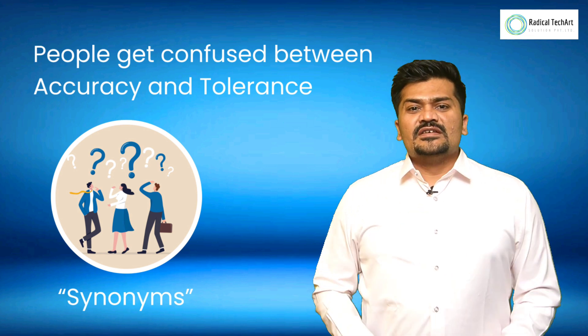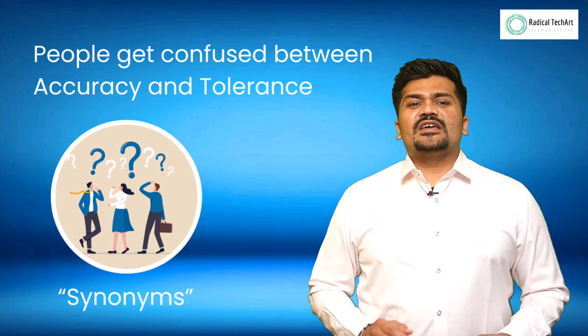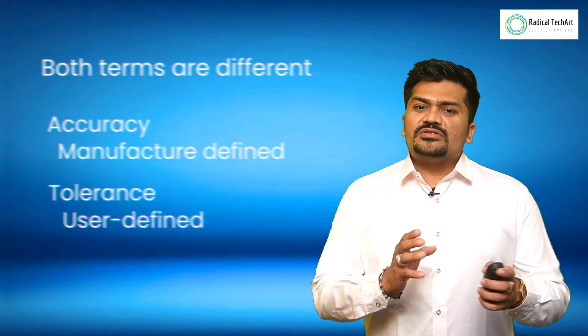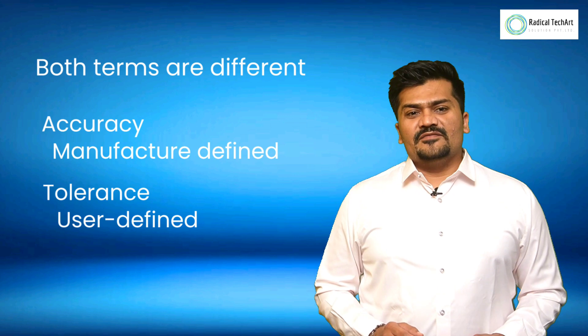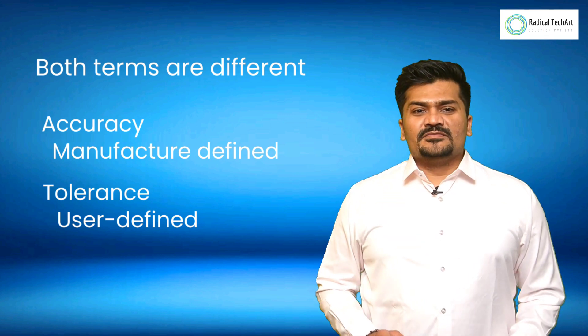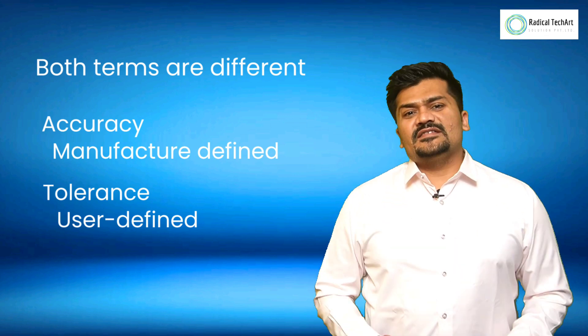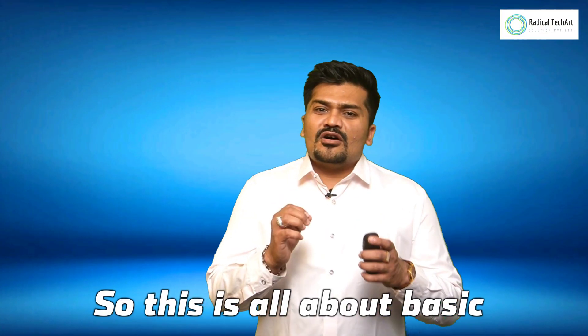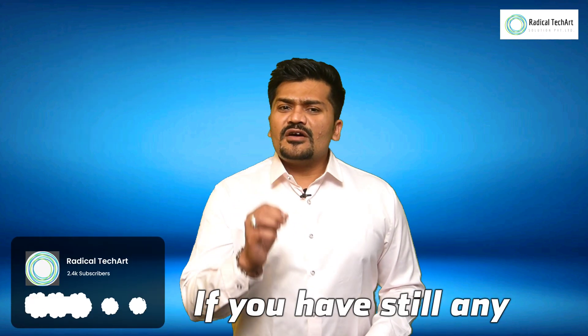Most of the time people get confused between accuracy and tolerance, and they are used as synonyms — but both are different. Accuracy is manufacturer-defined, whereas tolerance is user-defined.